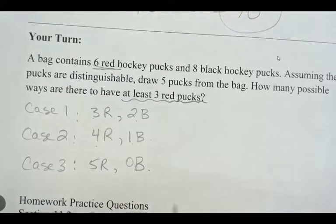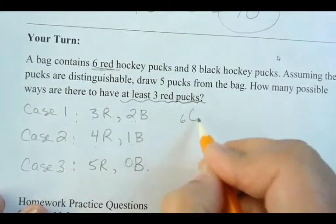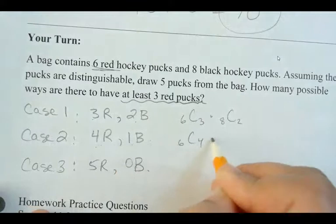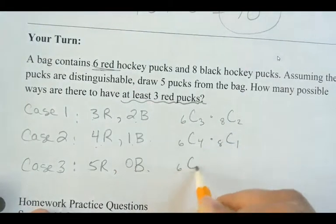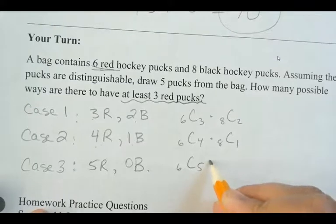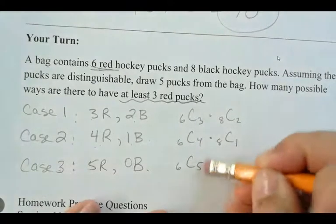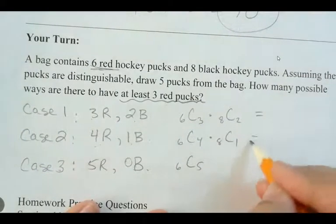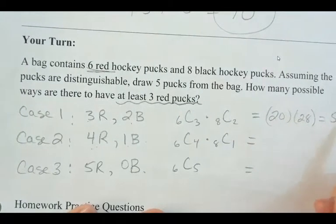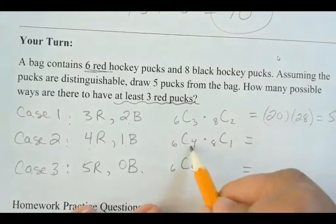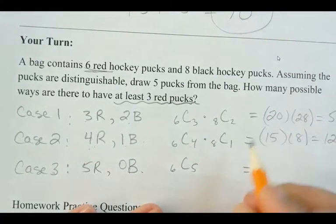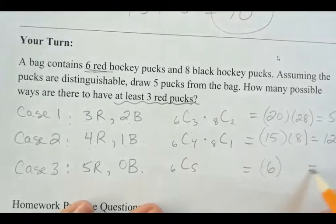Now, if we figure out, so now we need to figure out each of these. So this is going to be 6 choose 3, and then 8 choose 2. This one's going to be 6 choose 4, times 8 choose 1, and then 6 choose 5, and then 8 choose 0, which is just going to be 1. So let's just ignore that and just leave it as that, right? So this first one, we end up with 20 and 28, and that together is 560. The second one here, we're going to have 15 times 8, and that is going to be 120, and this one's just going to be 6 times 1, which is 6.